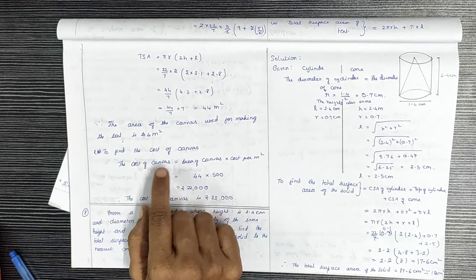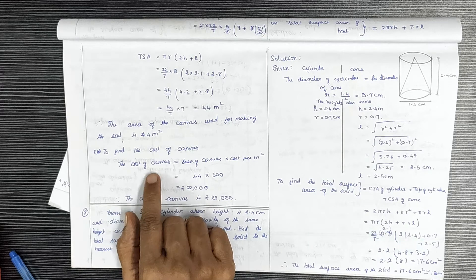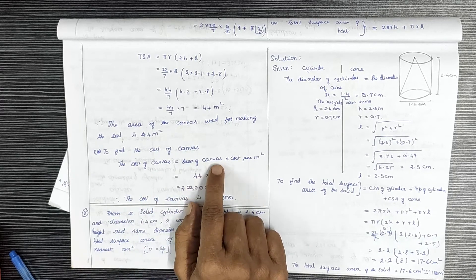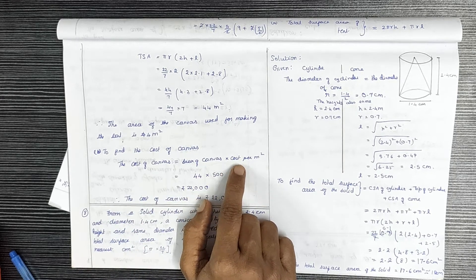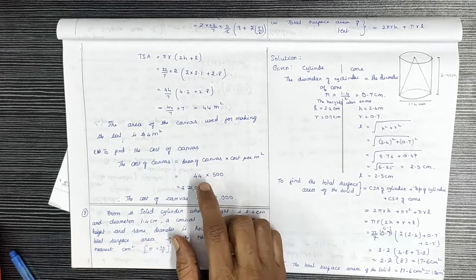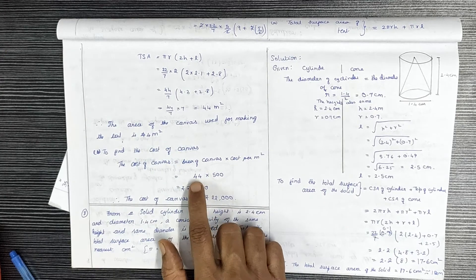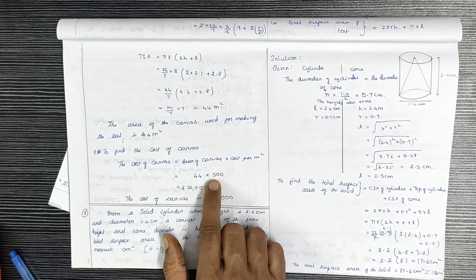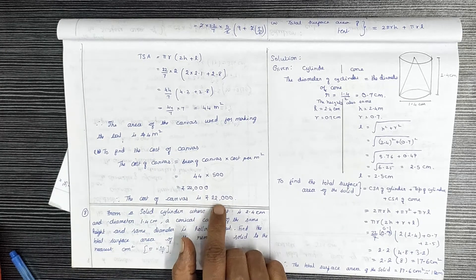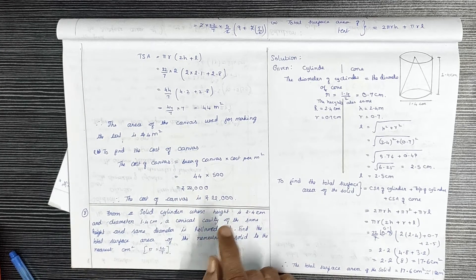The total cost equals the area of the canvas multiplied by the cost per metre square. Area is 44m² and cost per m² is Rs.500, so 44 × 500 = Rs.22,000.